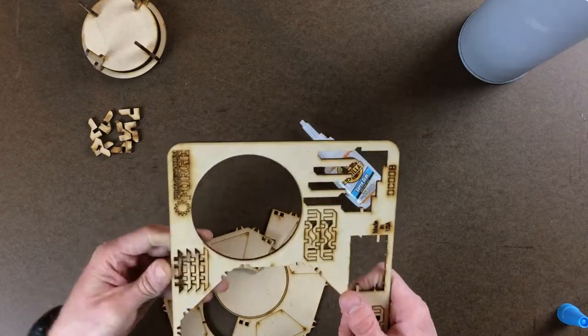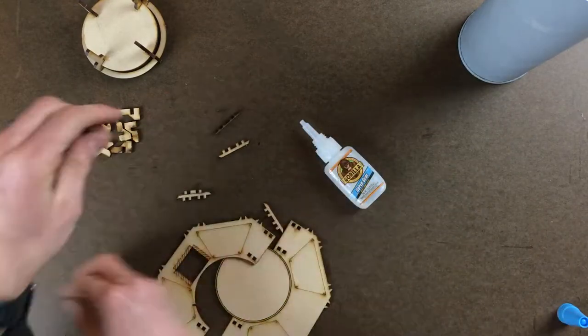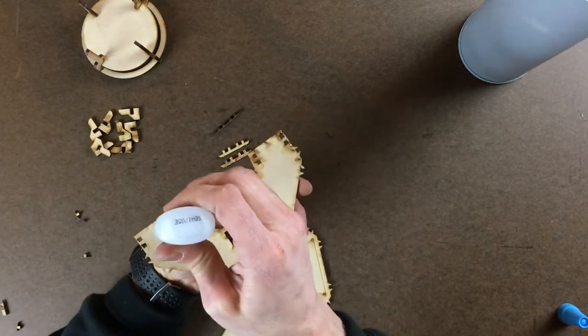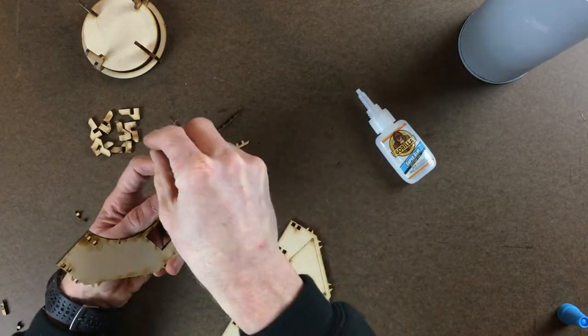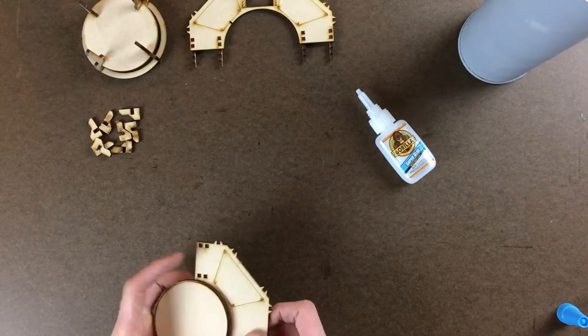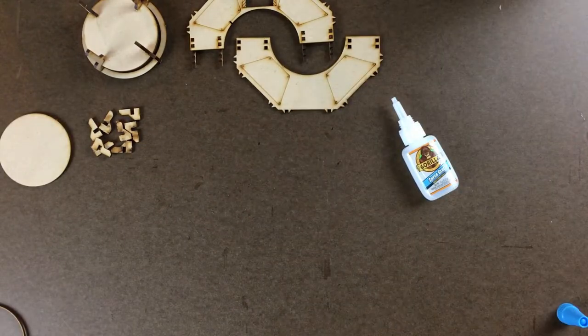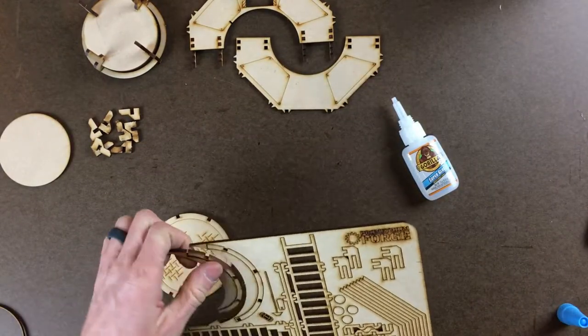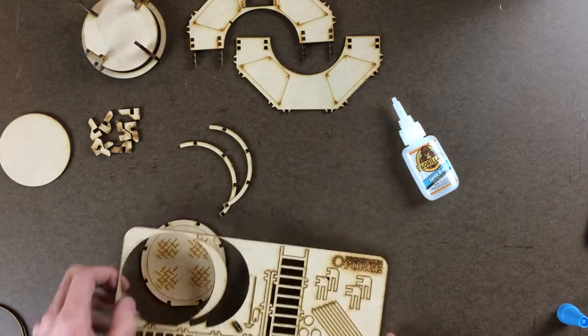Next up we're gonna punch out the main platform and supports. We will only glue the supports to one side of the platform because obviously we have to put the chip can in the middle. So get this nice and flush and save that disc right there. Next up, top platform. Use a little care when you're punching out those railings there, they can be a little fragile.